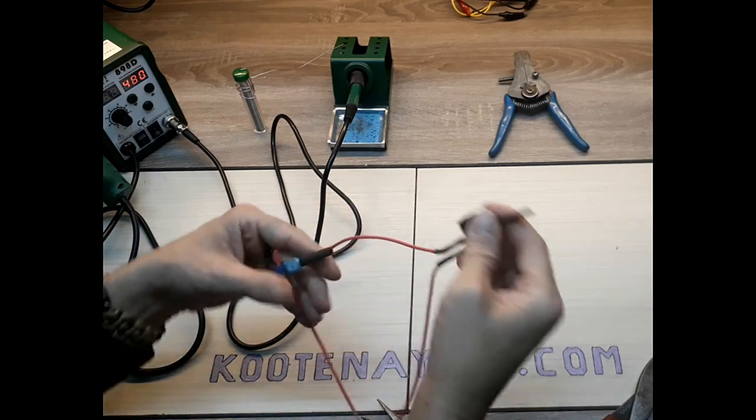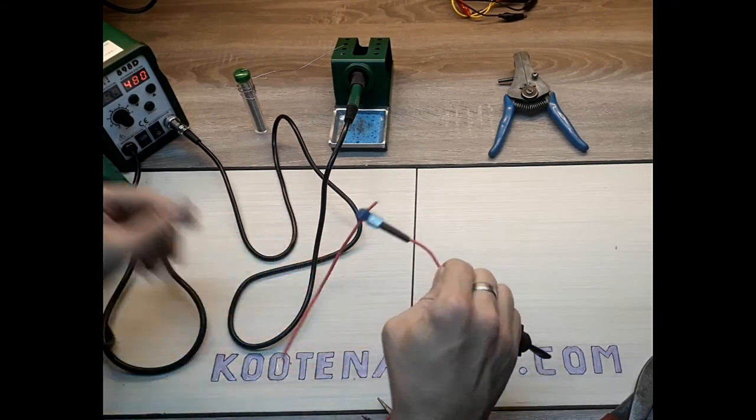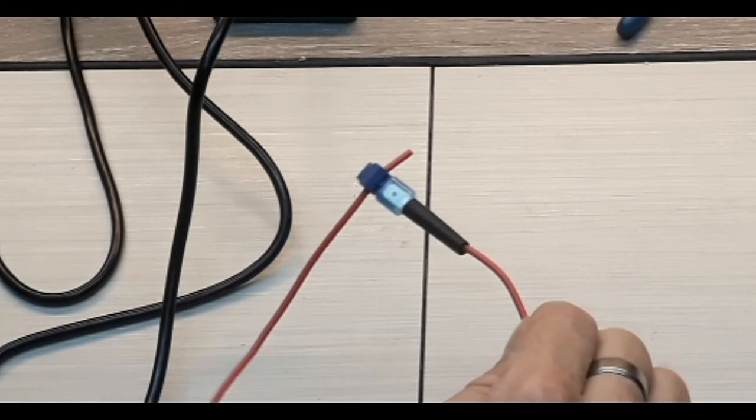You then take your heat shrink, run it down to the end over top of the connection.